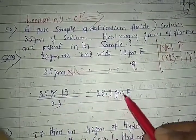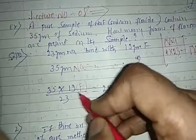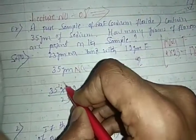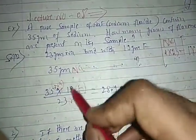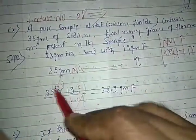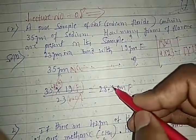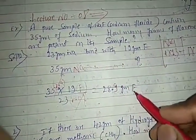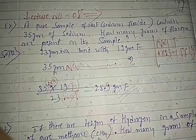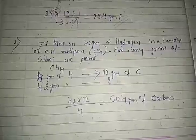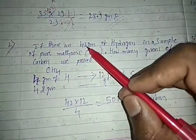We get: (35 × 19) / 23 = 28.9 grams of fluorine. So 28.9 grams of fluorine is present in the sample. Now let's see the next example: if there are 42 grams of hydrogen in a pure sample of methane (CH4), how many grams of carbon are present?